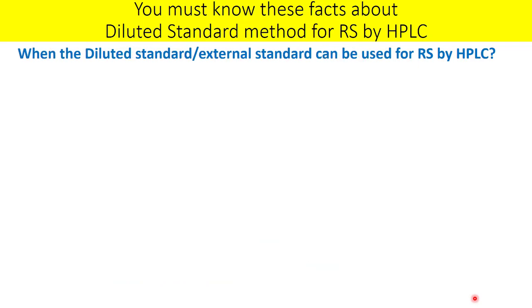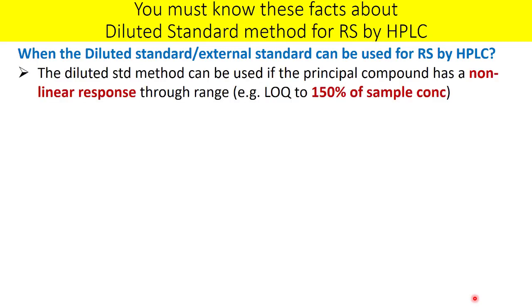The next important question is: when can the diluted standard — also known as the external standard method — be used for related substances by HPLC? The diluted standard method can be used if the principal compound has a non-linear response through the range, for example from LOQ to 150% of the sample concentration. With a UV detector, the response becomes disproportionate at higher concentrations.